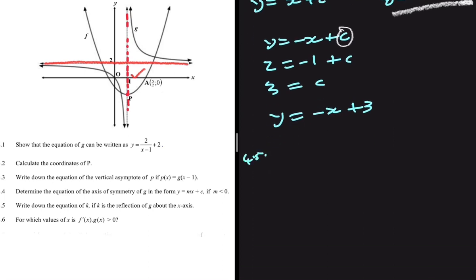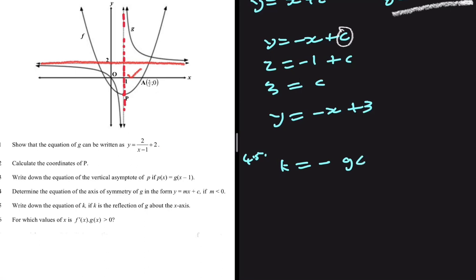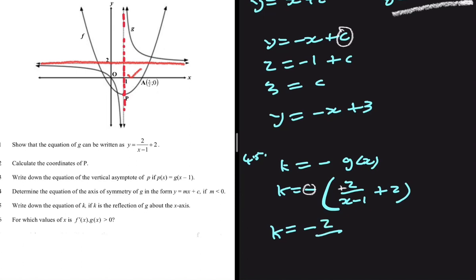Question 4.5: write down the equation of k, if k is the reflection of g about the x-axis. A reflection about the x-axis means k equals minus g of x. Substituting g of x, which is 2 divided by x minus 1, plus 2: negative times positive gives negative 2 divided by x minus 1, and negative times positive 2 gives minus 2. So k equals minus 2 divided by x minus 1, minus 2.